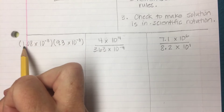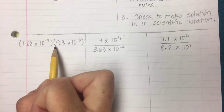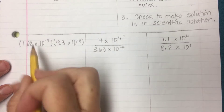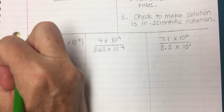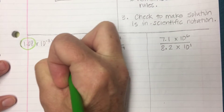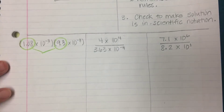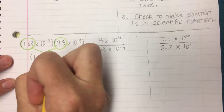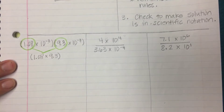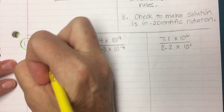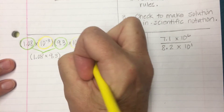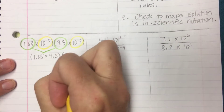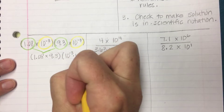Here's another multiplication example: 1.08 times 10 to the negative 3rd, times 9.3 times 10 to the negative 3rd. The first thing I'll do is combine my like terms. I pull my regular numbers together: 1.08 times 9.3. My other set of like terms are my numbers with exponents — 10 to the negative 3rd and 10 to the negative 3rd — and I'll pull those together as well: 10 to the negative 3rd times 10 to the negative 3rd.